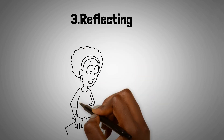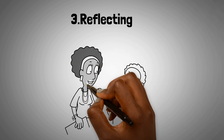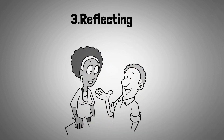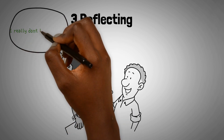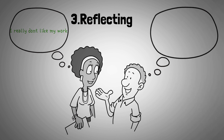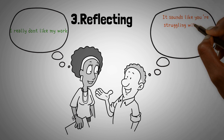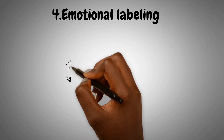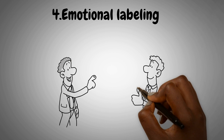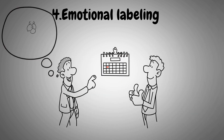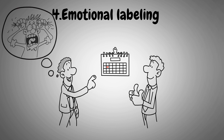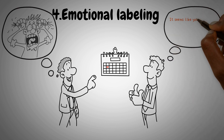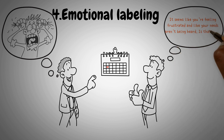The third technique is Reflecting — paraphrasing or summarizing what the other person said to show you're actively listening. For example, you might say, 'It sounds like you're struggling with this task and feeling like you don't have enough support. Is that right?' The fourth technique is Emotional Labeling: identifying and vocalizing someone else's emotions to acknowledge and validate them. For example, 'It seems like you're feeling frustrated and like your needs aren't being heard. Is that right?'